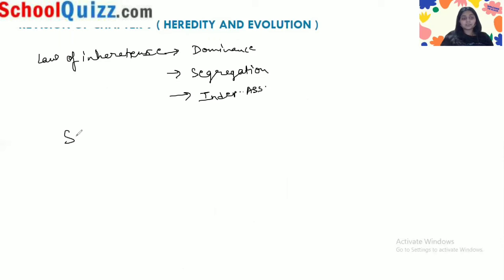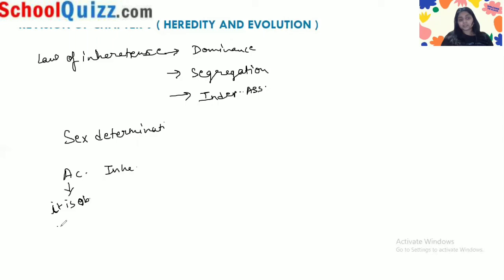Two remaining topics are sex determination and acquired versus inherited characters. An acquired character is something obtained through lifetime experiences — it is not in your reproductive cell. For example, you have curly hair because your mother also has curly hair — that is an inherited character. But if you learn to swim or learn English, those are acquired characters — obtained by you during your lifetime.